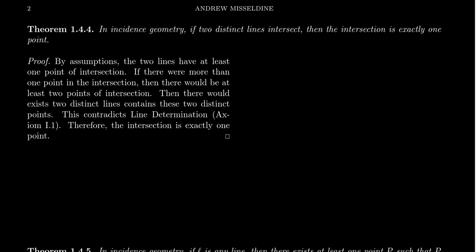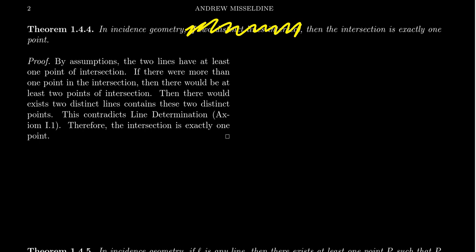The first theorem of incidence geometry: if two distinct lines intersect, then the intersection is exactly one point. We have seen this theorem before in a couple of different incarnations. With Fano geometry, we didn't have the "if" because it had an axiom that said all lines intersect, so there was no conditional. This statement could be vacuously true if the condition is not satisfied, but if two lines intersect, the intersection is exactly one point.